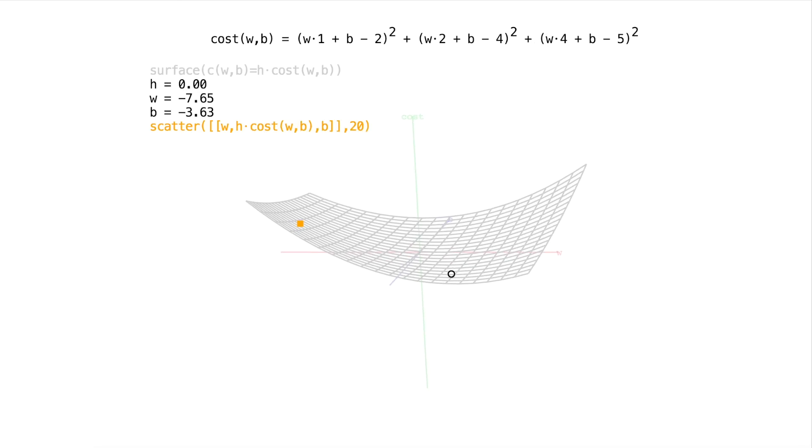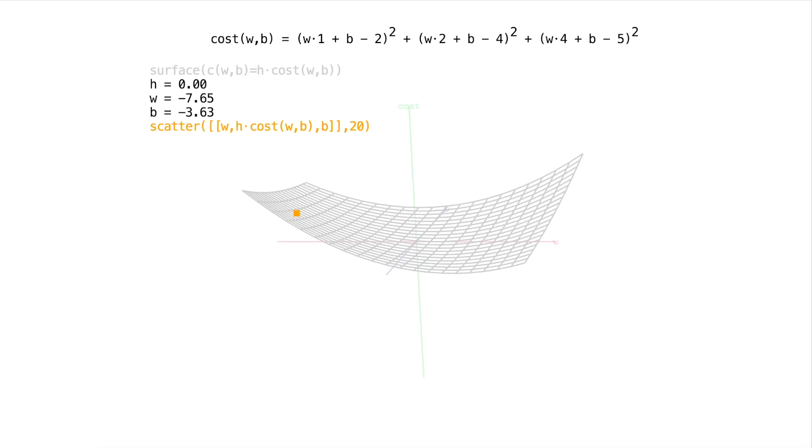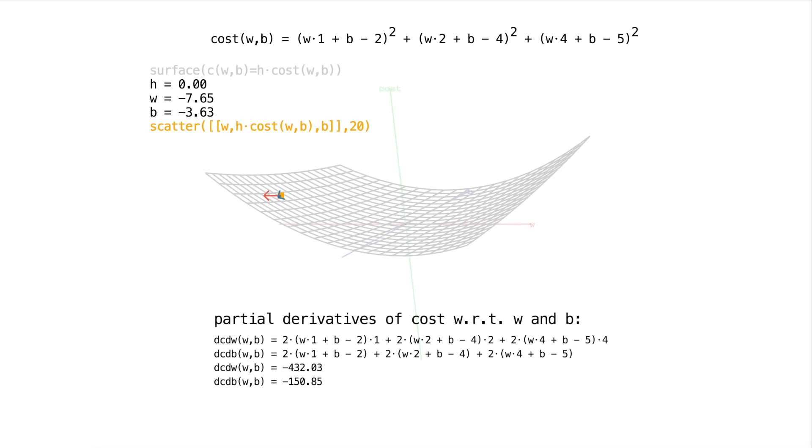So once we know that, we'll know the direction to move to minimize the cost. And so to get those directions, like in our previous example, we took the derivative of our cost function with respect to its single parameter for our super simple neural network. But in this case, we have two parameters. So we have to take the partial derivative of the cost with respect to each. And that will tell us how the cost is changing for a small change in each of them.